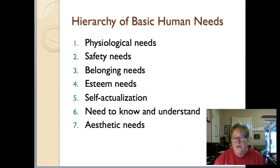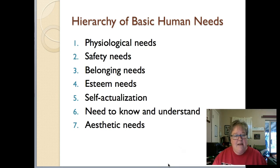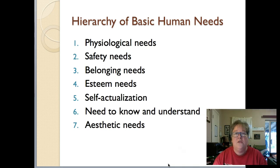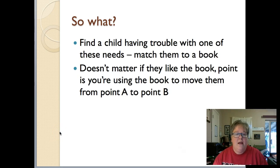Number six is what Maslow called the need to know and understand — similar to Havighurst's fourth task, the need to be able to read, communicate, and do basic math. And seventh, my personal favorite, is what Maslow called aesthetic needs: the belief that because we are human, we all have a need to experience beautiful things. Children's literature fits right here — not just the stories but also the art, and there is beautiful art in children's literature.